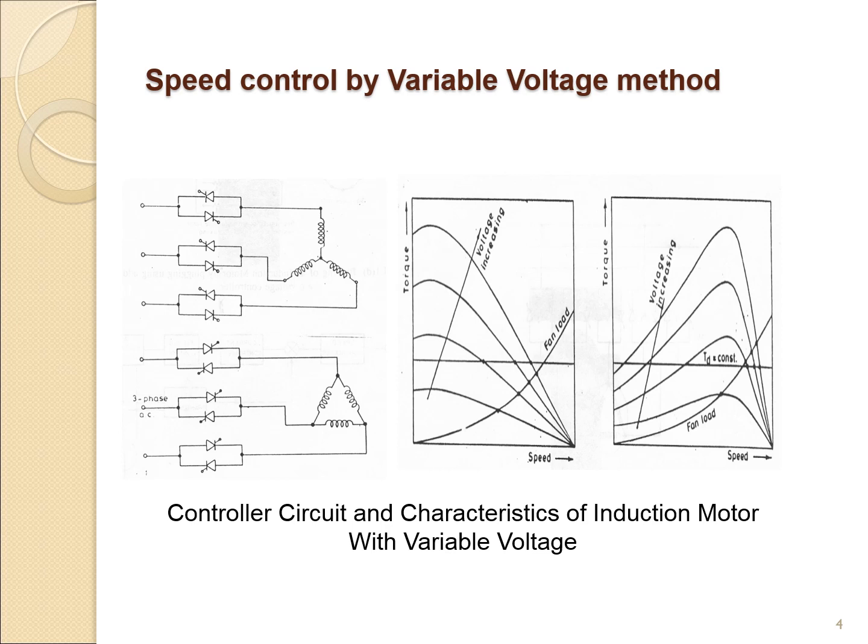By varying the firing angle, the output voltage can be varied, and by this method the applied voltage to the AC motor can be controlled. Since voltage is directly proportional to speed, if the voltage varies, the speed of the AC motor can be controlled automatically.